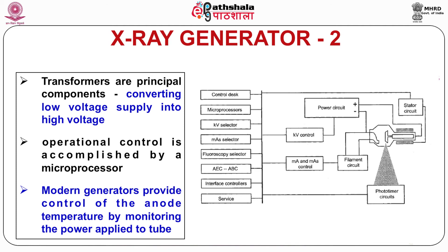X-ray generators have circuitry designed to protect X-ray tubes from potentially damaging overload conditions. Combinations of kVp, mA, and exposure time delivering excessive power to the anode are identified and such exposures are prohibited. Heat load monitors calculate the thermal loading of the anode based on kVp, mA, and exposure time, considering the duration for cooling. Some X-ray systems are equipped with sensors that measure the temperature of the anode and protect the tube and housing from excessive heat.